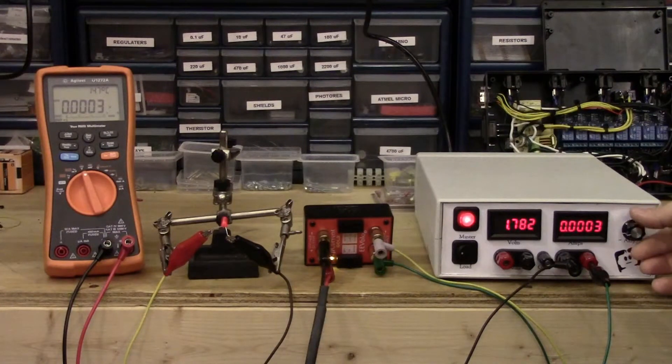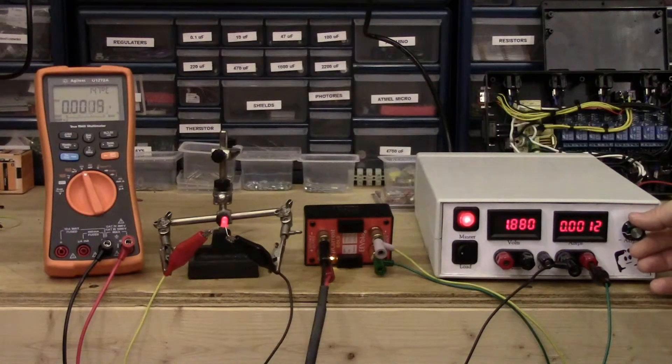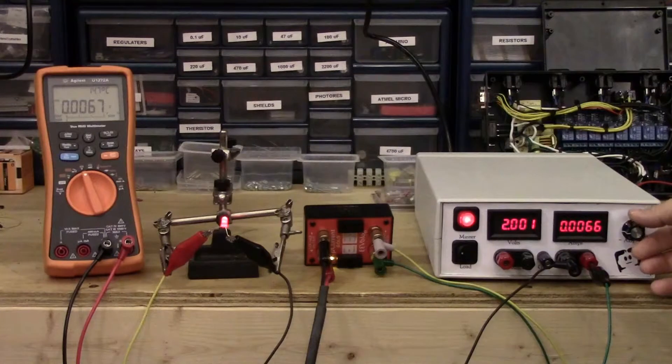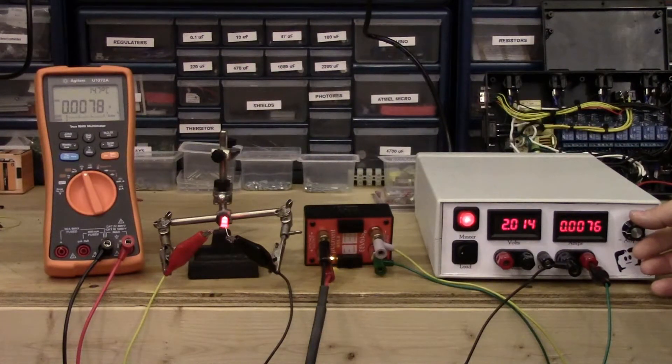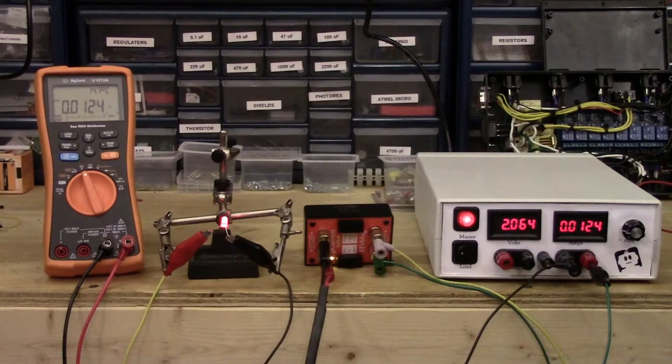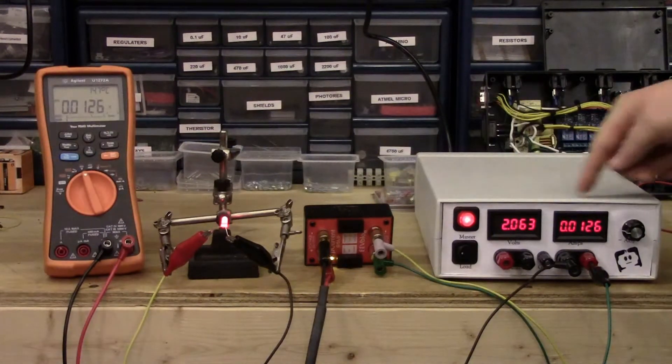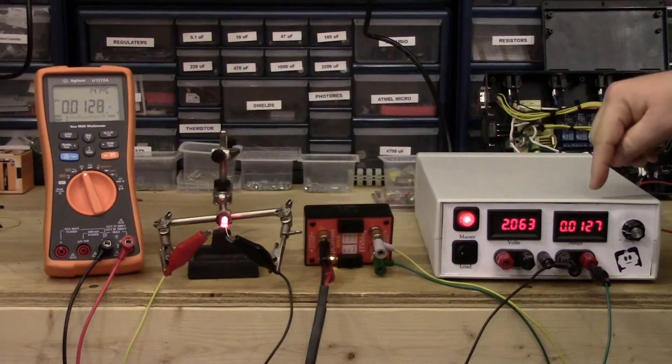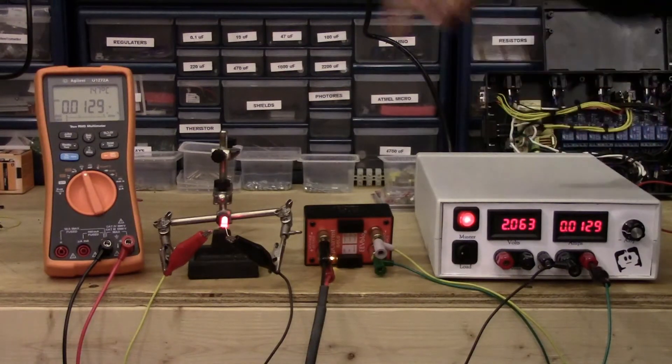Let's see just how accurate this meter is. Again, we're a little over two volts and we're showing 12 milliamps, almost 13 milliamps. That's just amazing.